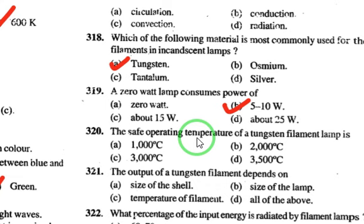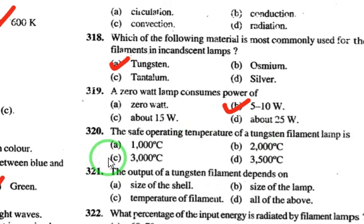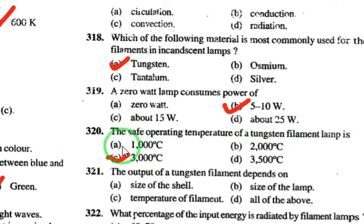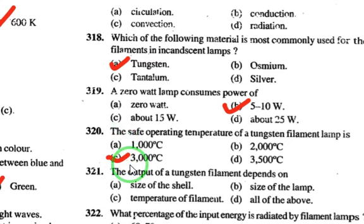The safe operating temperature of tungsten filament lamp is 3000°C. The melting point of tungsten is 3500°C, but for safe operation the temperature is 3000°C.